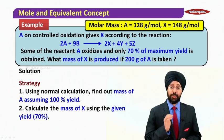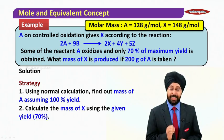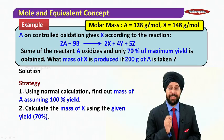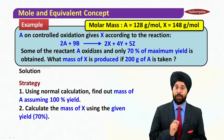And then using the mass of X that we have calculated, we will calculate the actual mass by using the percentage yield 70%. So let us see how we do it.